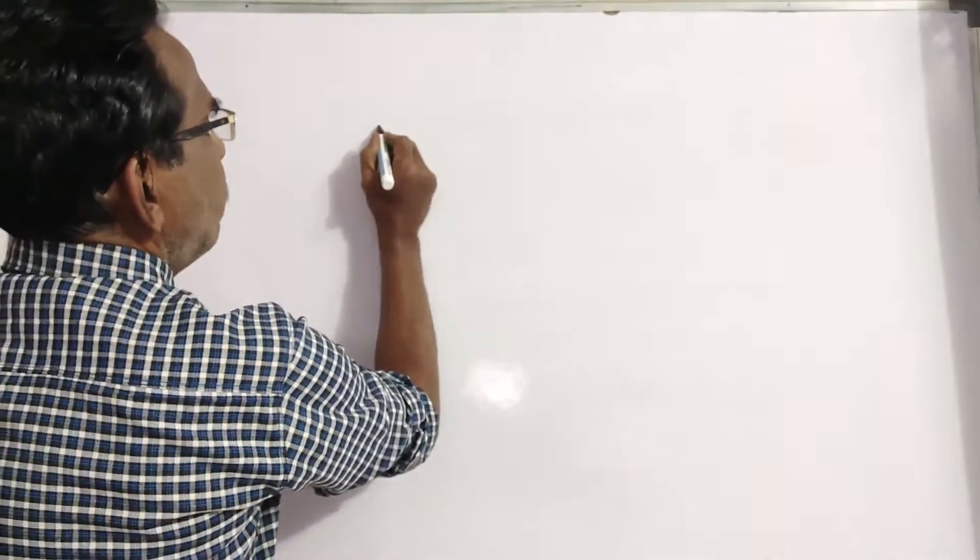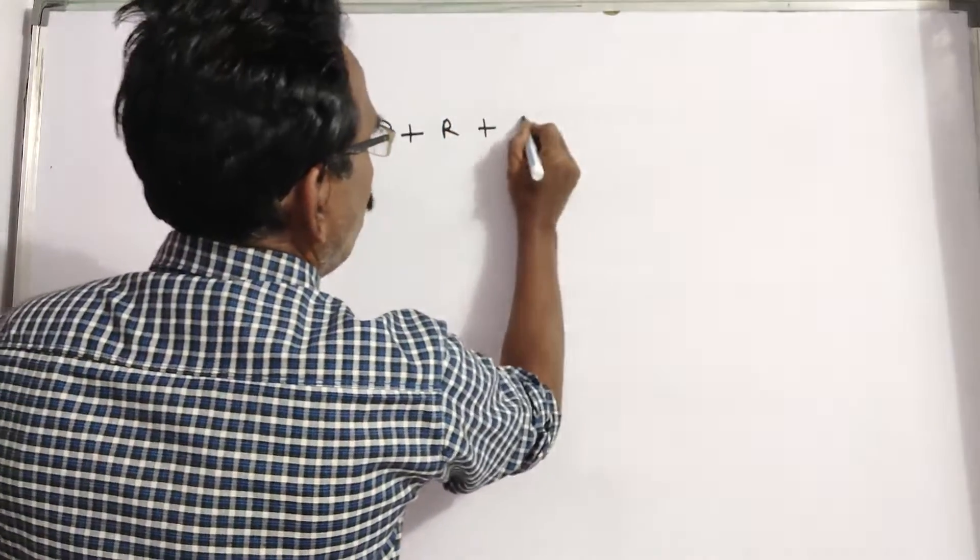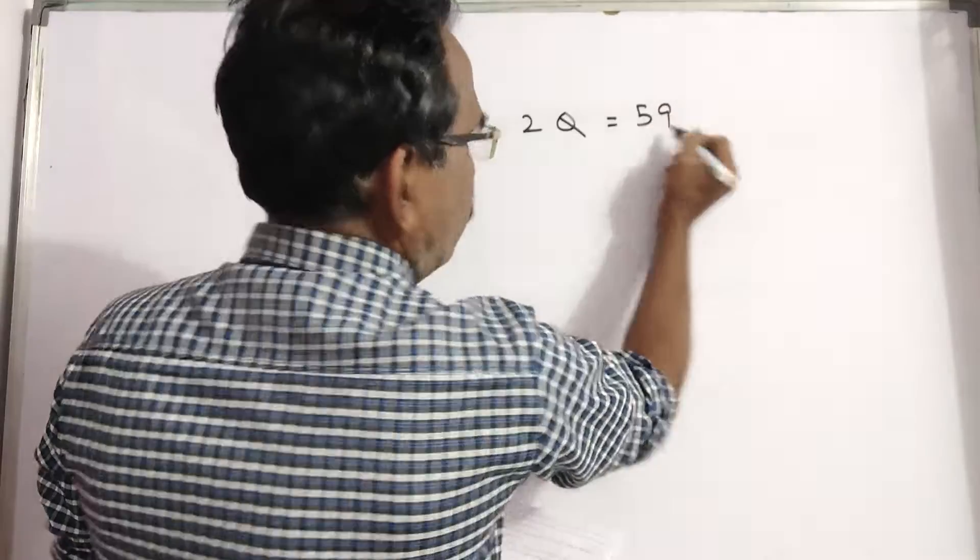If the age of P and R are added to twice the age of Q, then the sum becomes 59.